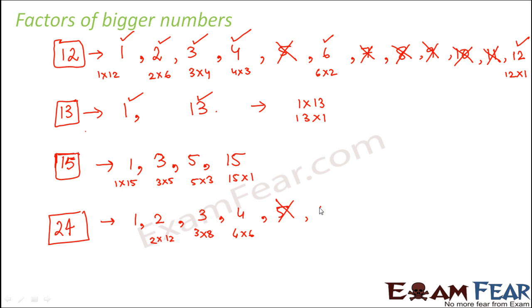5, no, 5 is not a factor. 6, yes, 6 into 4 is 24. 7, no, 7 is not a factor. 8, yes, because 8 into 3 is 24.